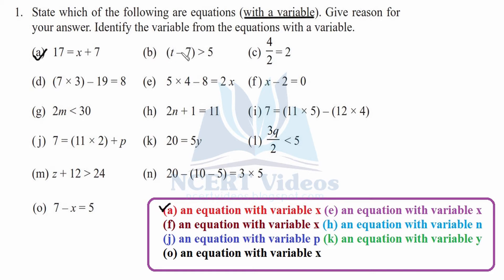For part b, you can see it has a greater than sign — it doesn't have an equal sign, so straight away cut it. Part c is indeed an equation but it does not have a variable, therefore it is a numerical equation, not an equation with a variable, so we will cross it. Part d is the same as c — it doesn't have any variable, it is a numerical equation, so we will cross it.